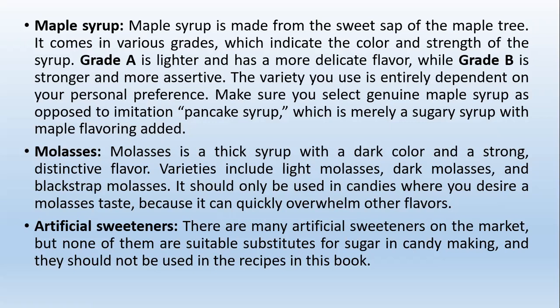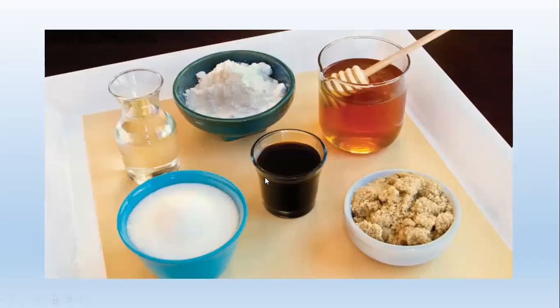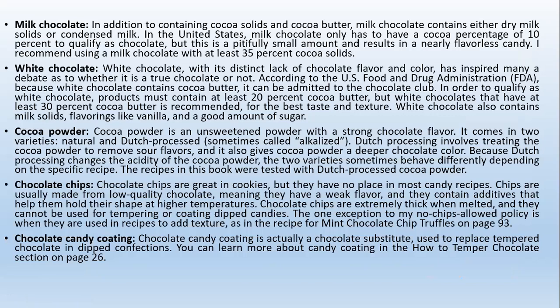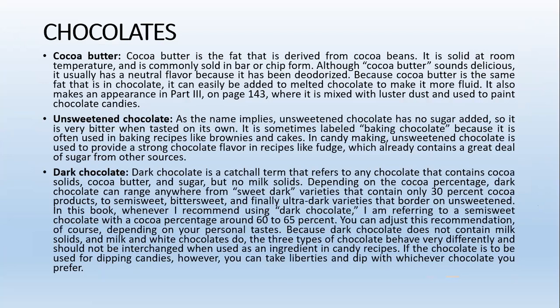In my opinion, artificial sweeteners can and should be added when necessary. Sugar alcohols like xylitol and maltitol can also be used as replacers in industrial candy production where you cannot add cane sugar, beet sugar, or sucrose. Here are examples of the sweeteners discussed: molasses, fine sugar, icing sugar, granulated sugar, brown sugar, and honey syrups. Next is chocolate. The types used in candy making include cocoa butter, unsweetened chocolate, dark chocolate, milk chocolate, white chocolate, cocoa powder, chocolate chips, and chocolate candy coating.